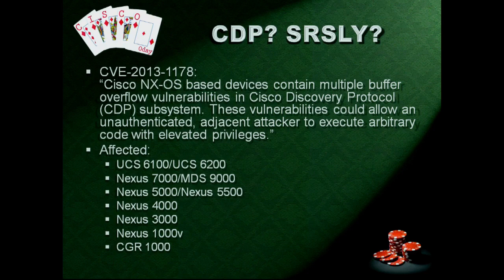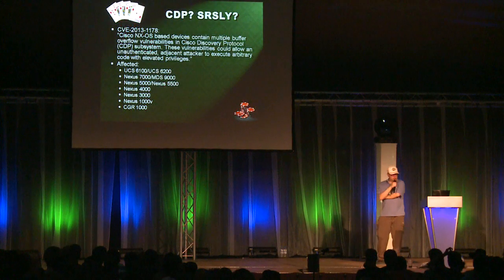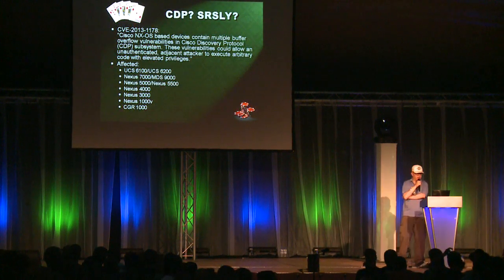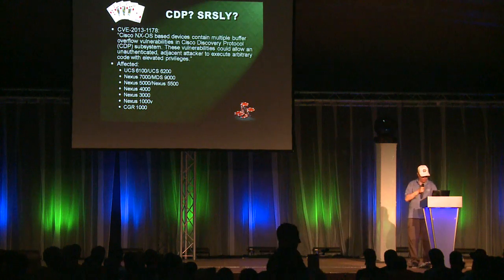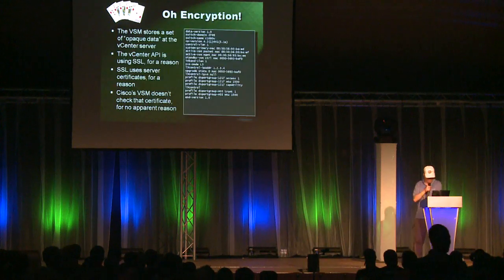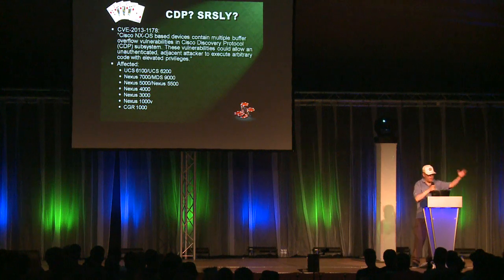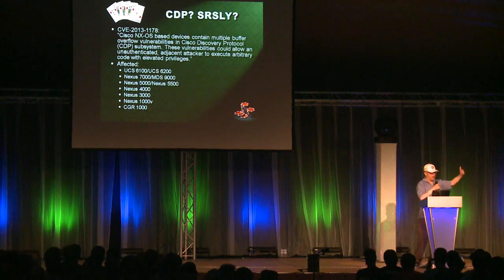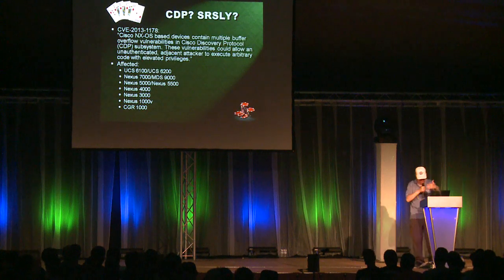Remote code execution vulnerabilities in Cisco UCS, which is the server management, all the Nexus from 7,000 down to the virtual thing in the CGR — people can run code in kernel. The lesson to be learned: if you invent a protocol, you better write a correct parser before you ship it.